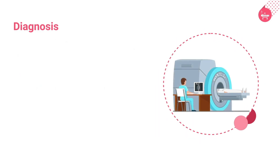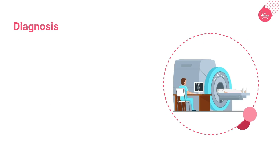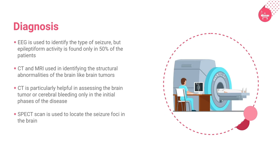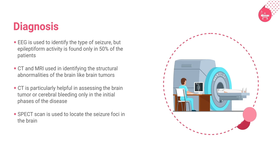Comprehensive testing using EEG, MRI, and other radiological diagnosis can help in estimating the abnormality in the brain. EEG, or electroencephalogram, is used to identify the particular type of seizure, but epileptiform activity is found only in 50 percent of the patients.